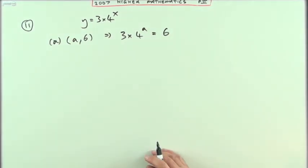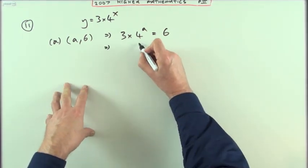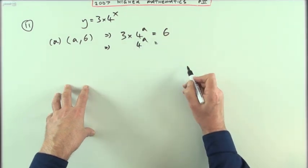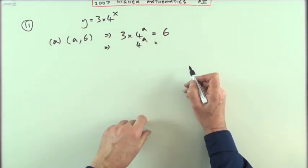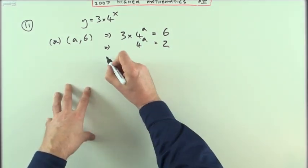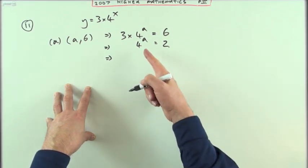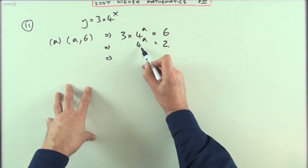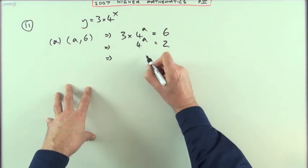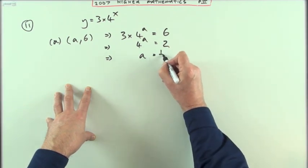Now it's just a case of let's get rid of the bits and pieces. We're going to do the 3 first of all, so 4 to the power a would be 6 divided by 3, which is 2. And the next part, since it's only worth one mark, I'm not going to start using logs here. This can be answered by inspection. You're just saying what power of 4 gives the answer 2? Well, 2 is the square root, so a must be a half.